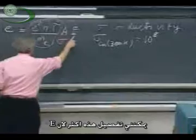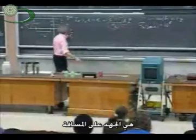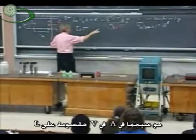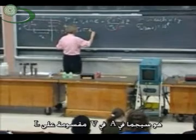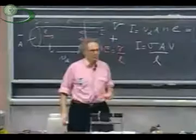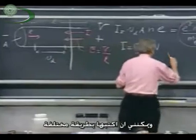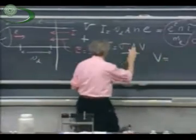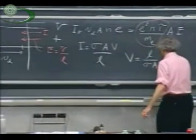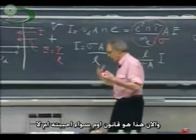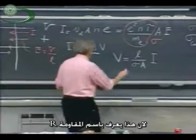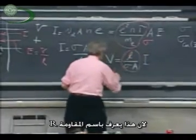I can massage this a little further because E is V divided by L. And so I can write now that the current is sigma times A times V divided by L. Writing it differently, V therefore equals L divided by sigma A times I. And now you're staring at Ohm's law, whether you like it or not, because this is what we call the resistance, capital R.